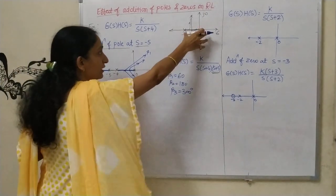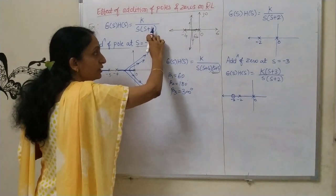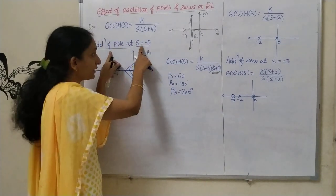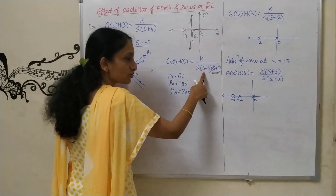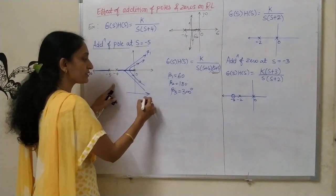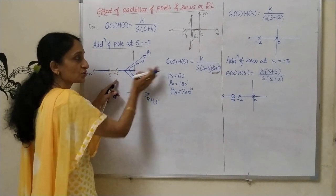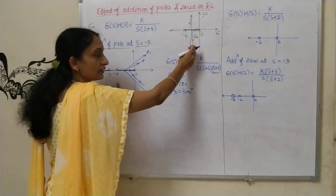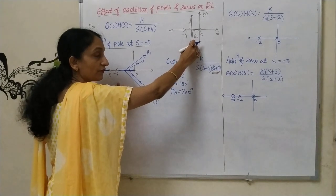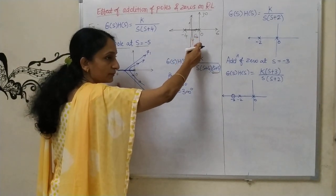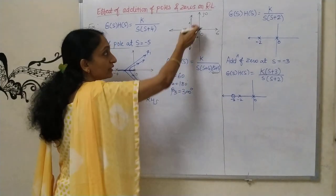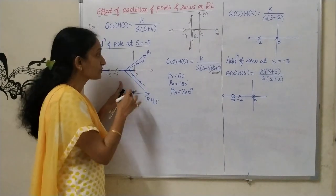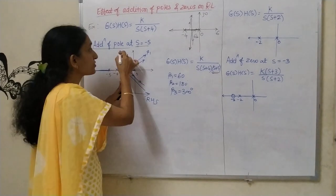Here I have taken the transfer function and got a root locus parallel to the j-omega axis. But when I add a pole to the same transfer function, the root locus is shifting towards the right-hand side. This system without the added pole is more stable because the root locus is further away from the j-omega axis. Here, as the root locus intersects the j-omega axis, the system may become unstable because of the addition of the pole.